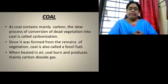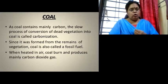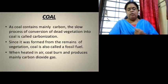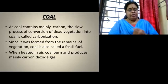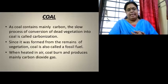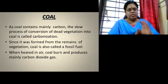Coal mainly contains carbon, which is the most abundant element in nature. The slow process of conversion of dead plants or vegetation into coal is called carbonization. Because it is formed from the remains of plants, coal is called a fossil fuel. When heated in air, coal burns — it reacts with the oxygen in the air and produces carbon dioxide gas.